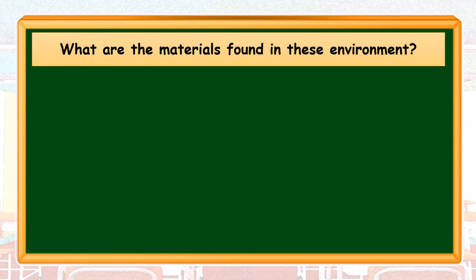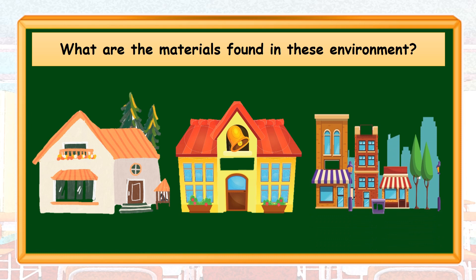What are the materials found in the environment? Different materials can be found in our environment. We can find them inside our home, in school, and even in our community. The purpose of these materials varies depending on their use. Proper classification is necessary for us to use them properly.